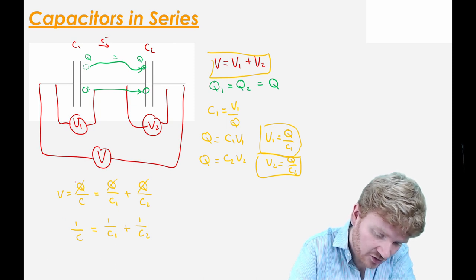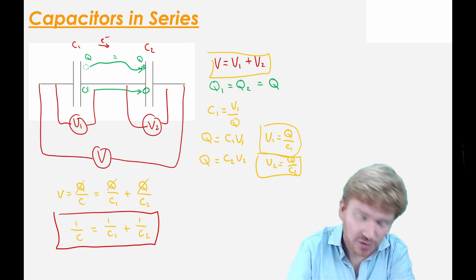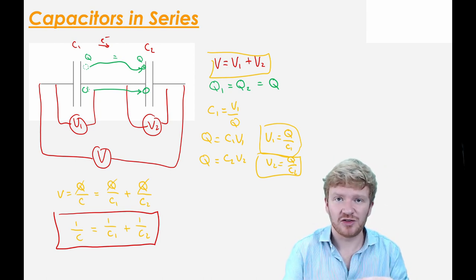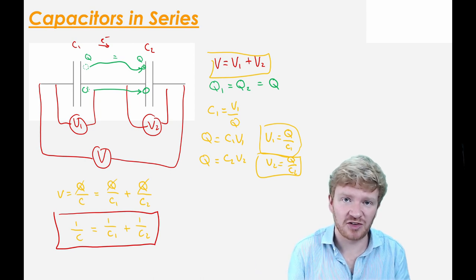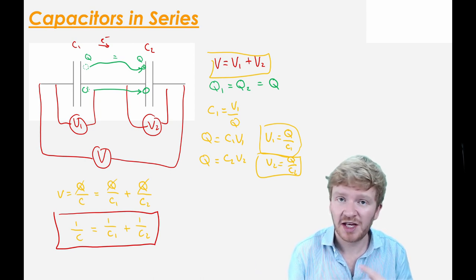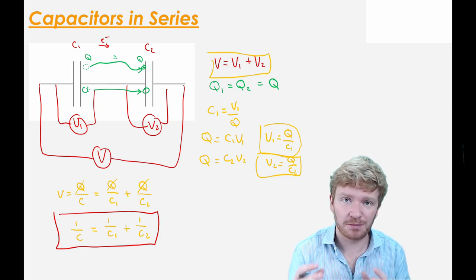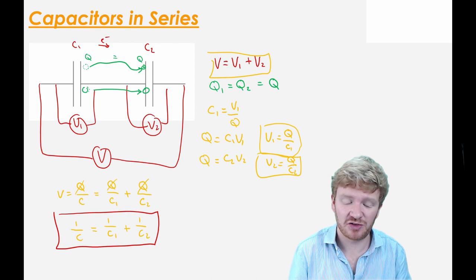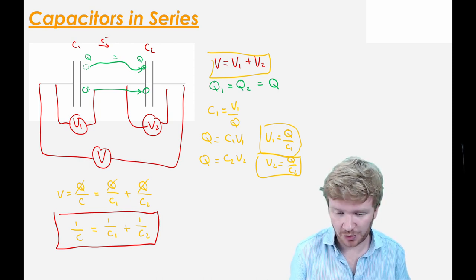And that is my key result. You can see this is very similar to resistors, but it's just inverted. Whereas resistors in series you add the resistances and in parallel you do the one-over equation, it's the opposite with capacitors. When capacitors are in parallel we add the capacitance; when capacitors are in series we use the one-over equation.